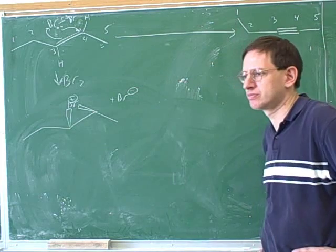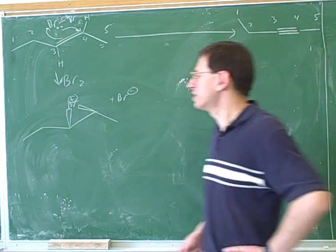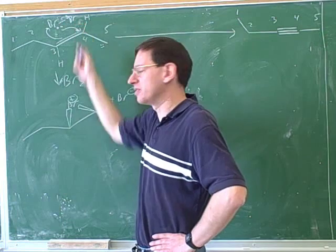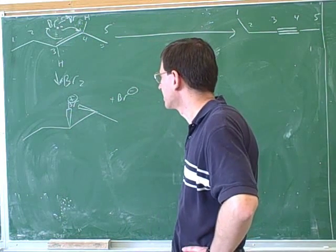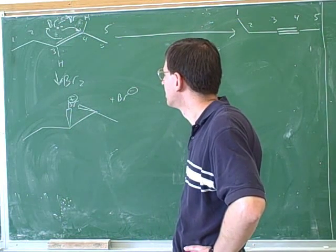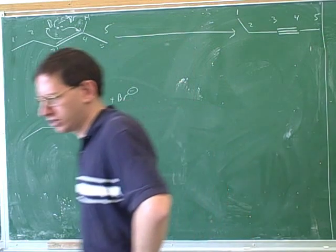The second step should be simpler. But notice, don't draw this first. You've got to draw the arrows first and then draw the intermediate. Now we can draw the next step.